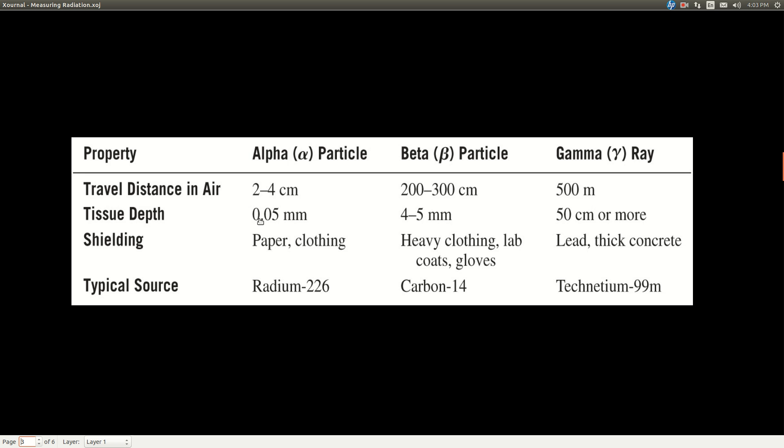How far do they penetrate into biological tissue? Well, an alpha particle not very far, like a half of a hundredth of a millimeter, not very far, just the surface. Whereas a beta particle can go four or five millimeters in. That's enough to do some damage. And whereas the gamma ray can basically go straight through a human being, half of a meter.